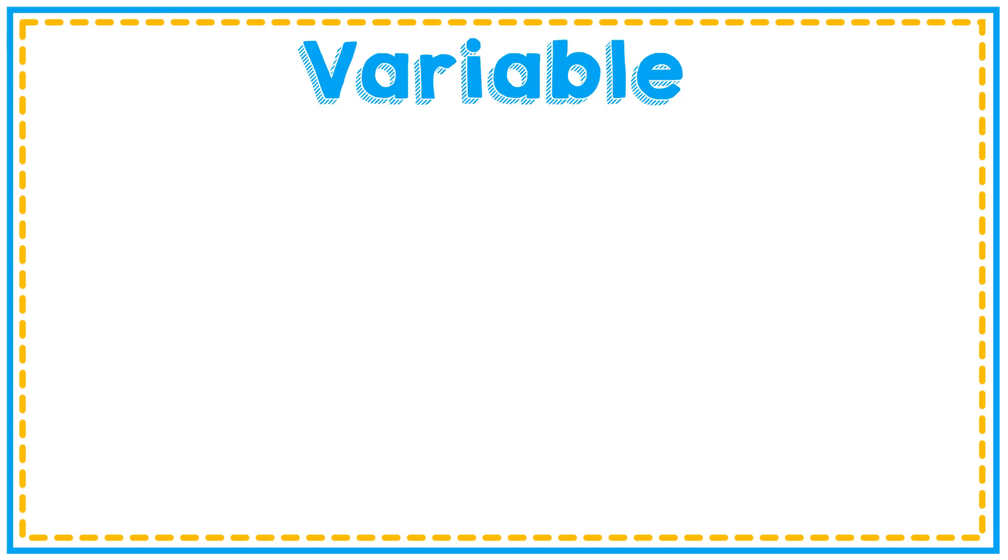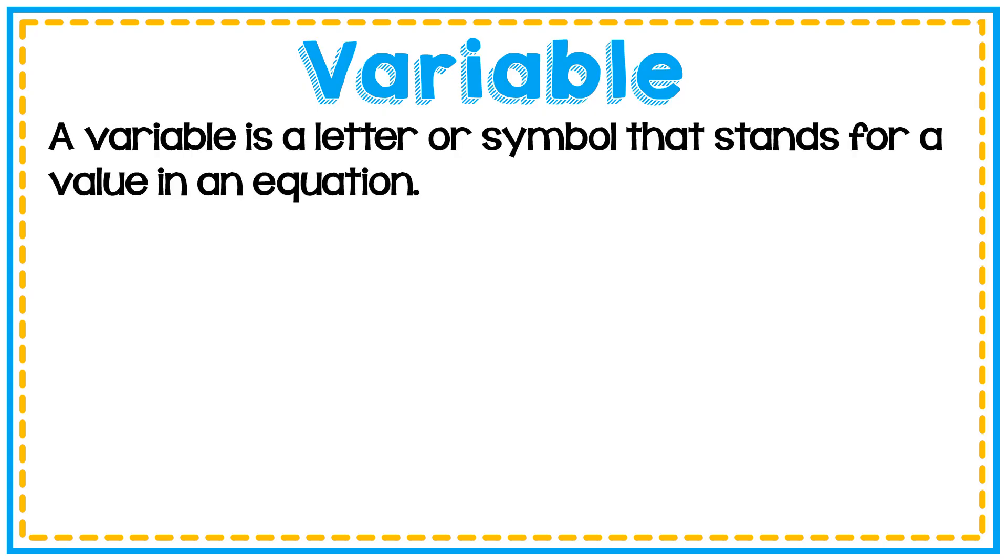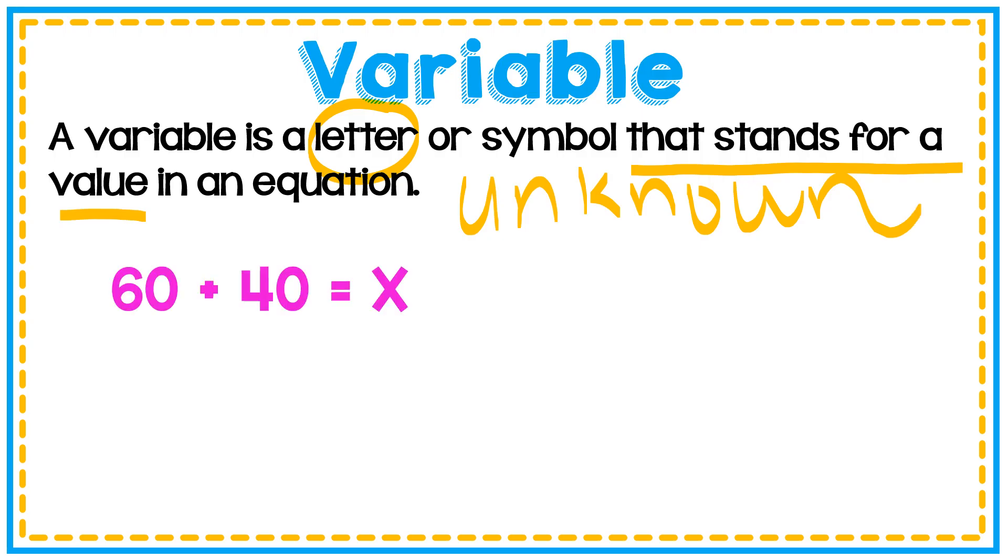I can't talk about strip diagrams without also talking about variables. This is a huge part of strip diagrams. A variable is a letter or a symbol - you'll oftentimes find letters - that stands for a value in an equation. We also call that unknowns. You're looking for an unknown in an equation. Let's look at an example. 60 plus 40 equals X. X is my variable. I need to figure out what X is. I know that 60 plus 40 equals 100, so X equals 100.